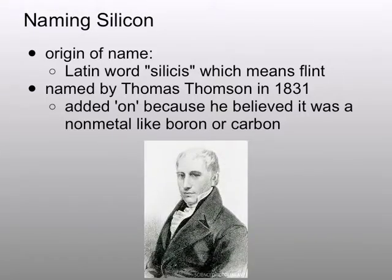Silicon comes from the Latin word silicus, which means flint, and it was named by Thomas Thompson in 1831. He added 'on' because he believed it was a non-metal, like boron or carbon.